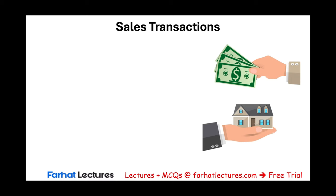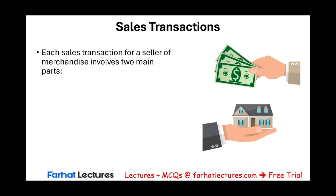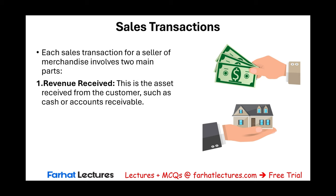Let's start by analyzing a basic sales transaction. If we are using a perpetual inventory system, each selling transaction will have two entries. First, we have to recognize the revenue because every transaction will have a revenue aspect. The revenue is the asset received from the customer, such as cash or accounts receivable.